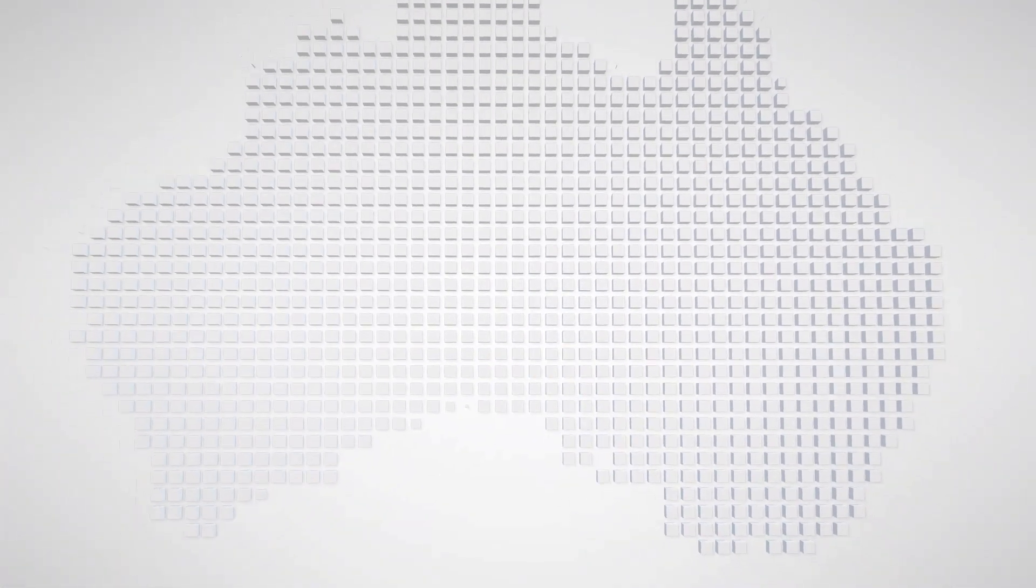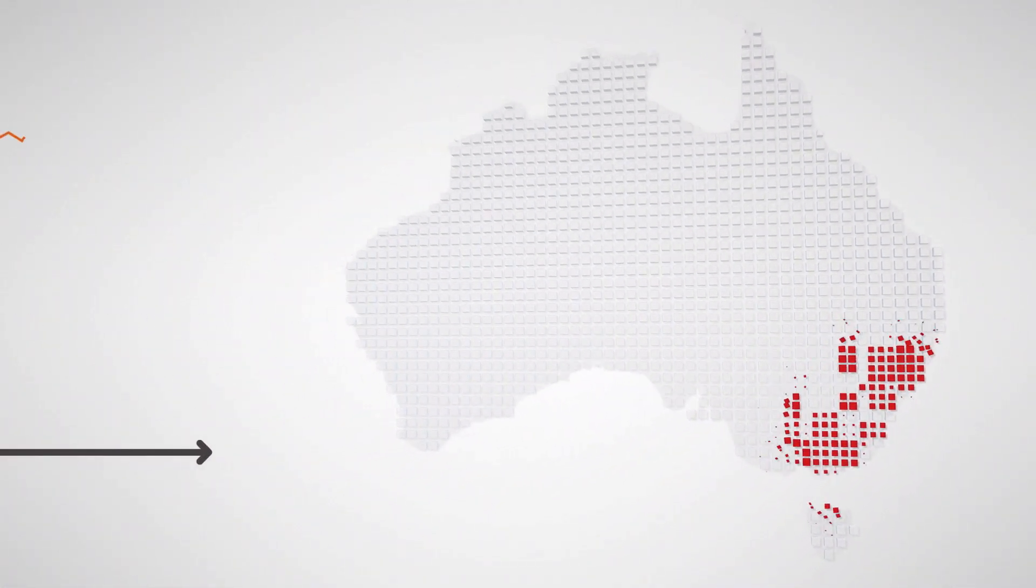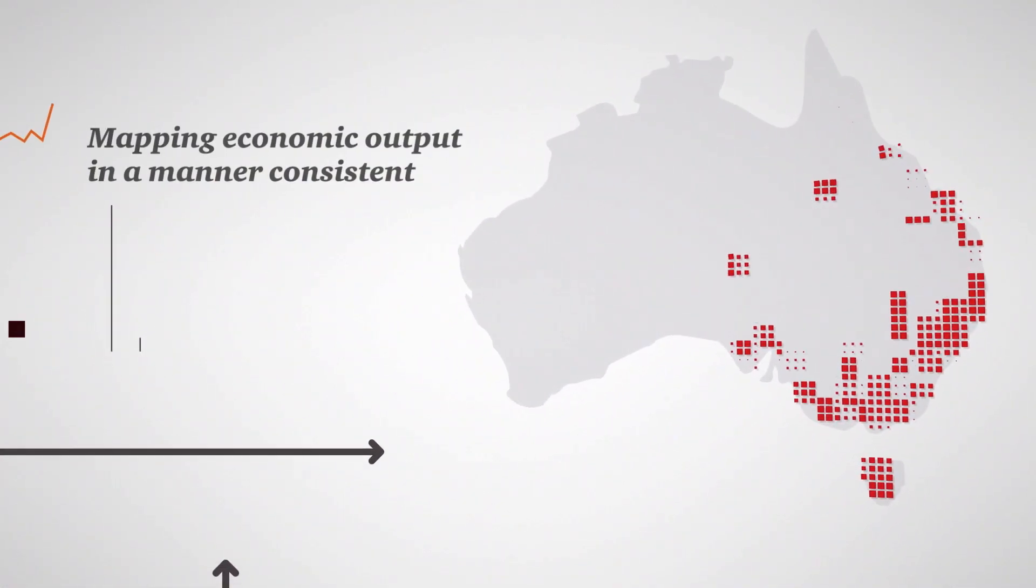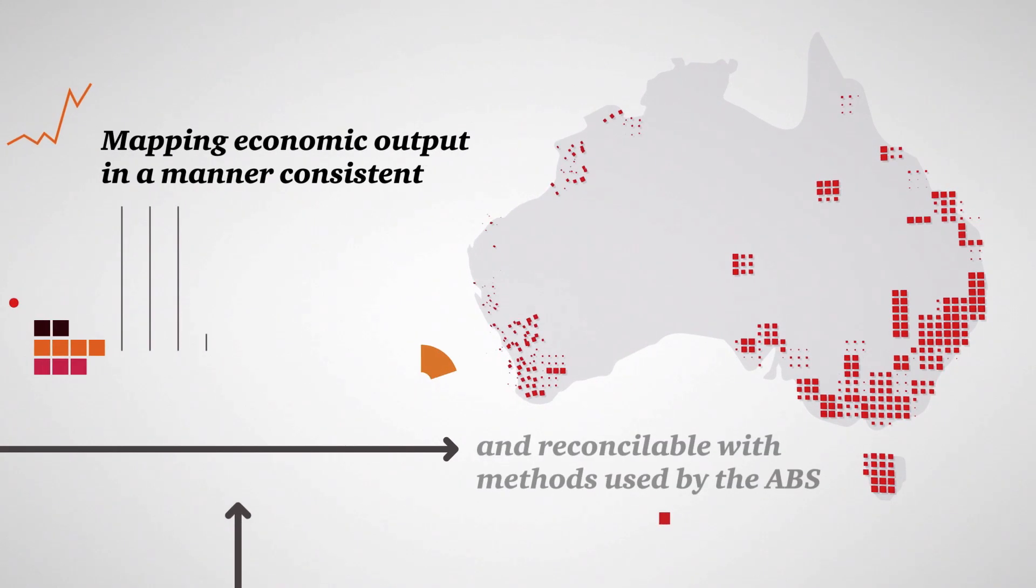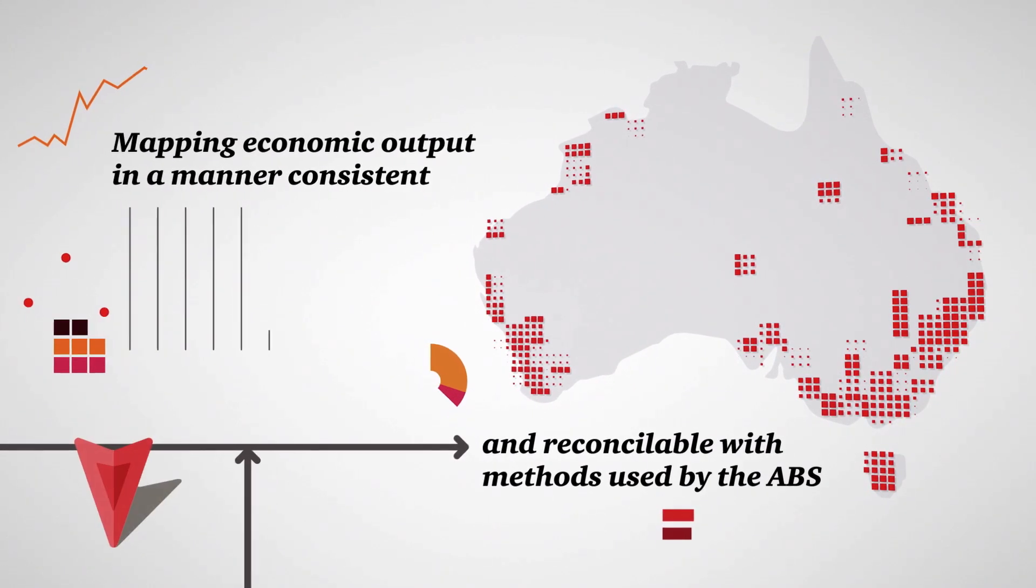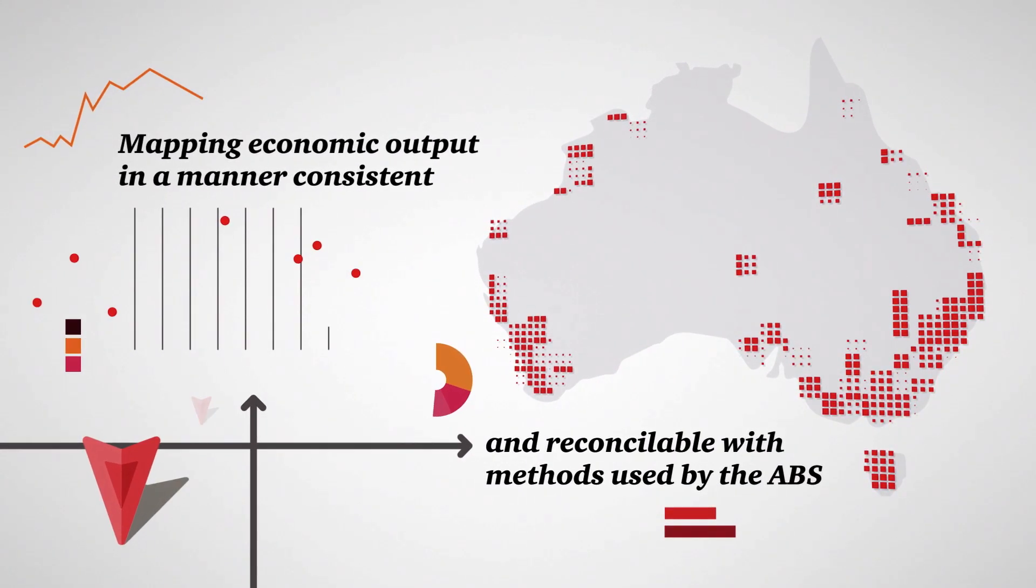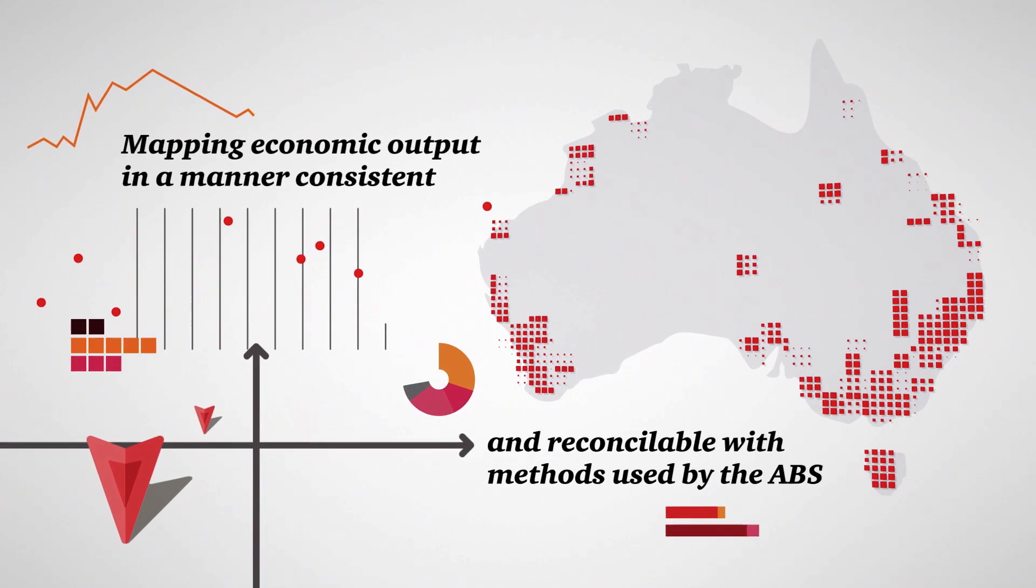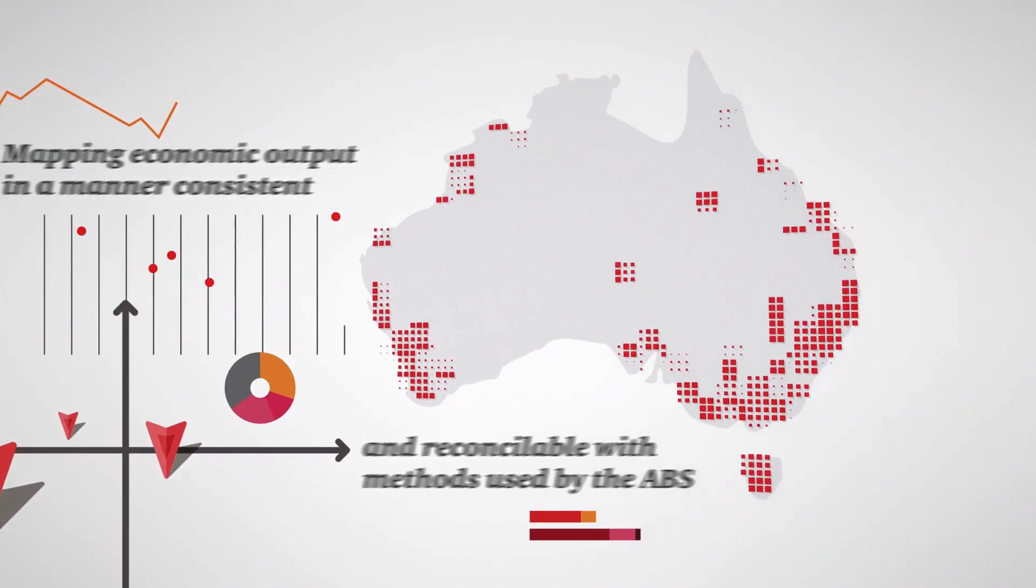We have sought to answer these questions from the bottom up, mapping economic output for 2,214 locations across Australia from 2001 to 2014, with forecasts out to 2030. Here's what we've found.